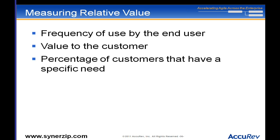Some ways of measuring relative value to differentiate between features: What is the frequency of use by the end user? If one feature will be used by everybody and another by just one customer, do the one with higher frequency — it has the most value. You may need to look at the cost, and don't think of the business unit as the only customer — work with the business unit and ask, 'How often will this be used in the field? Help us understand that so together we can come up with the ROI.'